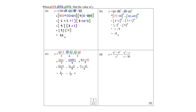3 plus 1 is 4, over 2. 2 minus 1 is 1 over 4. Plus negative 1 minus 3 is negative 4, over 3. Continue to simplify: 4 divided by 2 is 2, minus 1 over 4. Negative 4 divided by 3 will be negative 4 over 3.